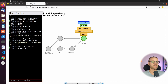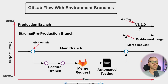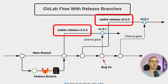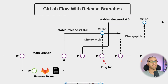Now that we've seen how the fast-forward merge works, let's go back to the presentation. That pretty much wraps up the environment branches version of the GitLab flow. Let's take a look at the second version, which uses release branches instead of environment branches.